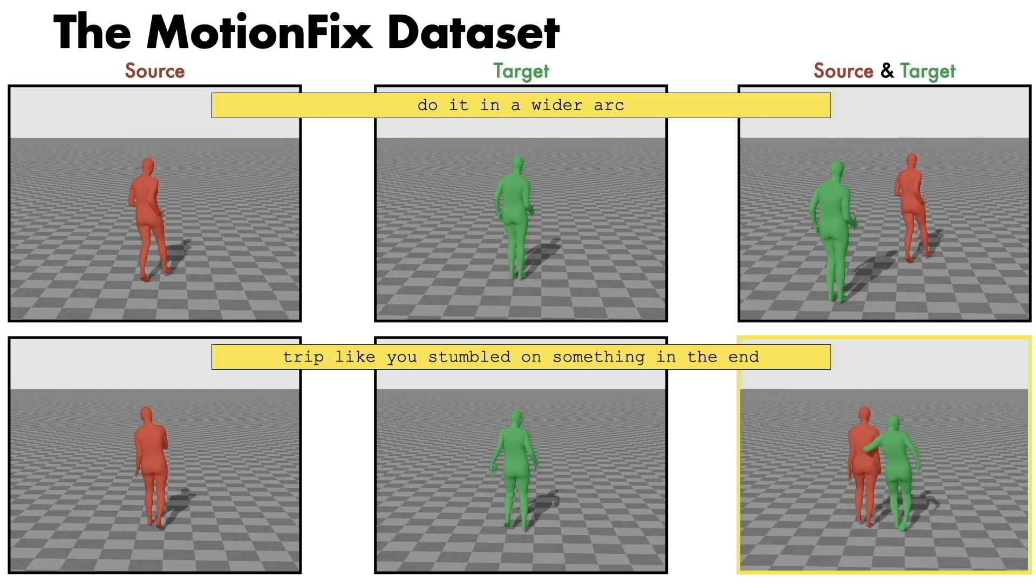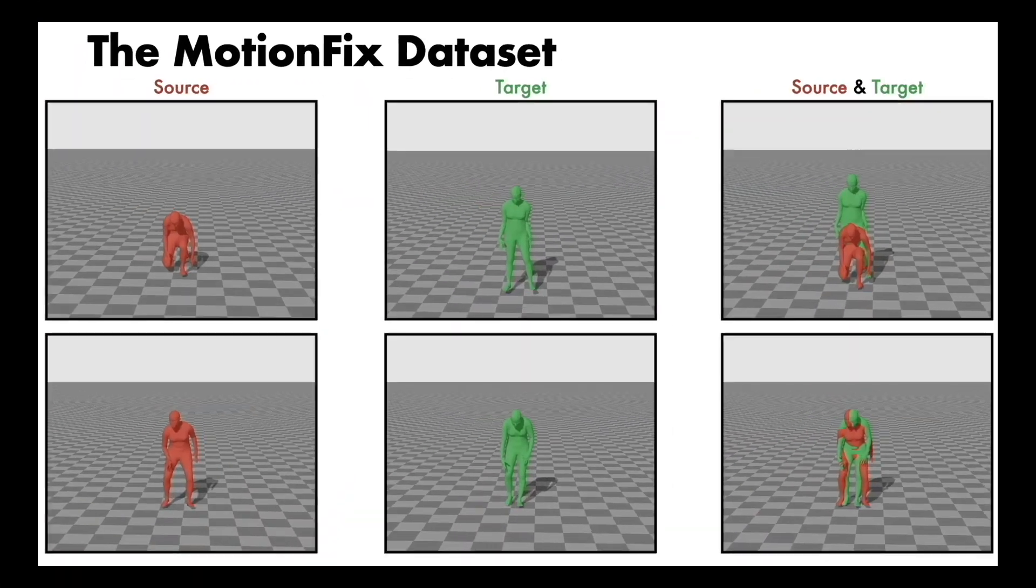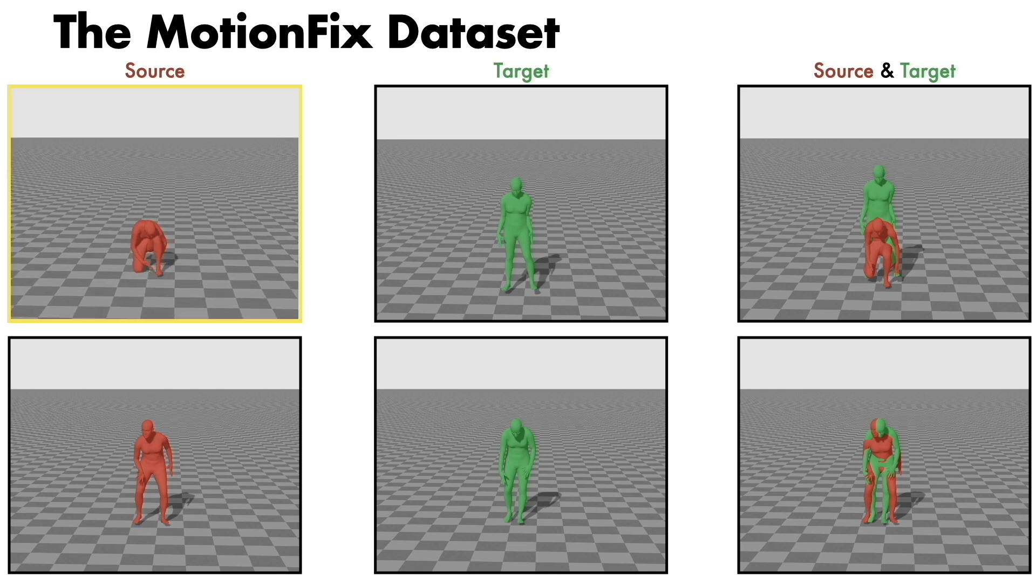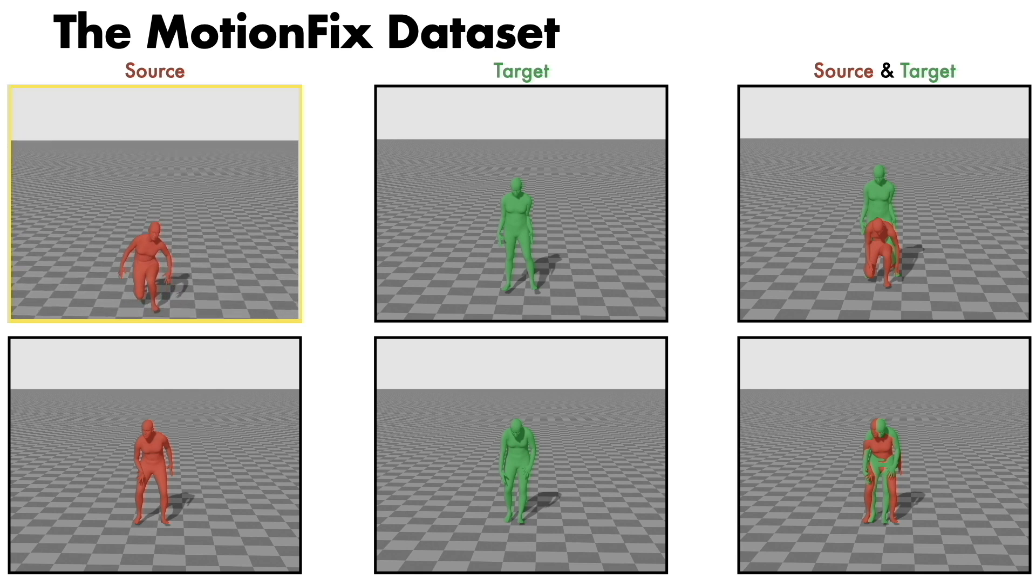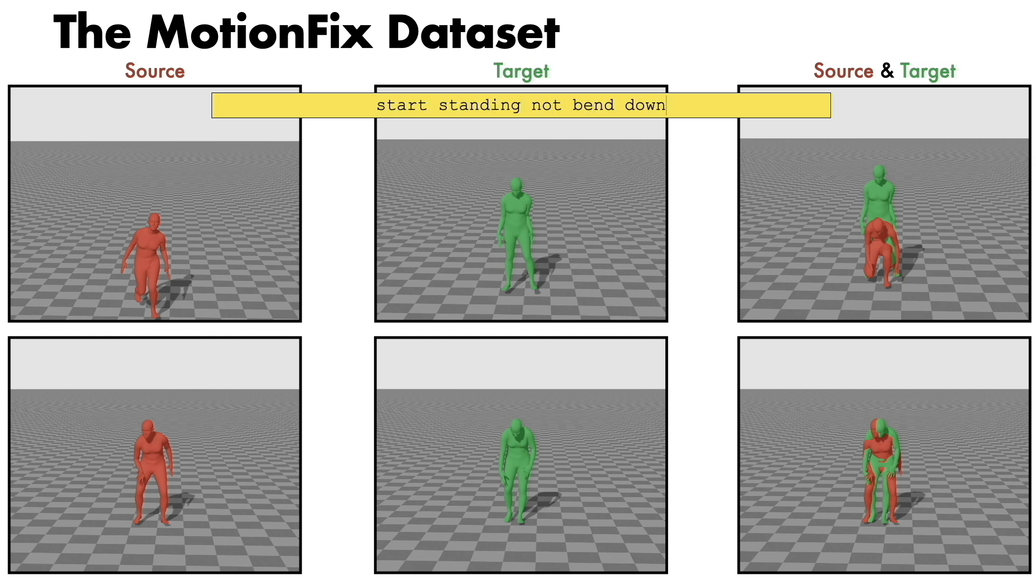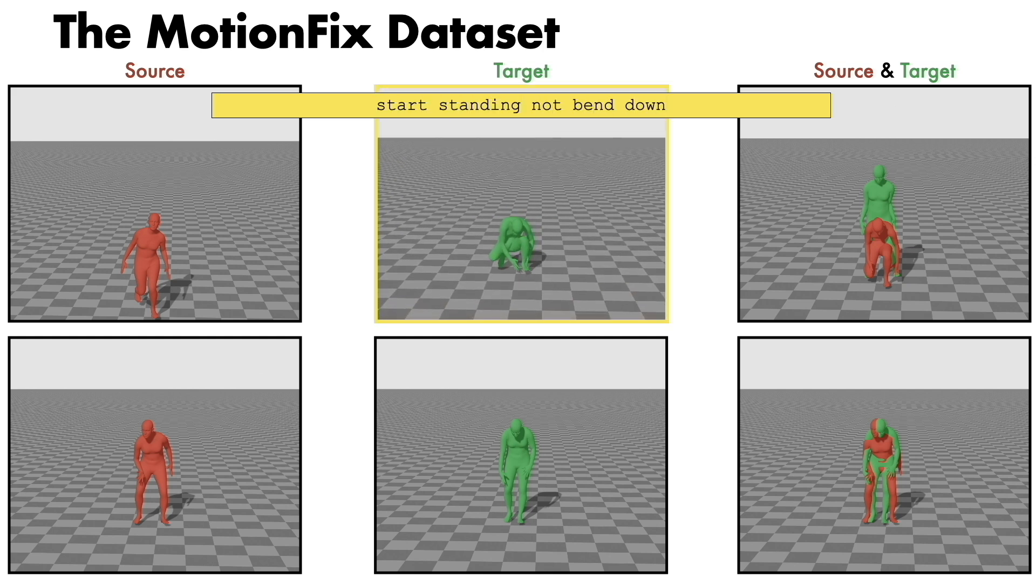In addition, there are triplets where motion is added in the initial animation, such as start standing, not bend down.